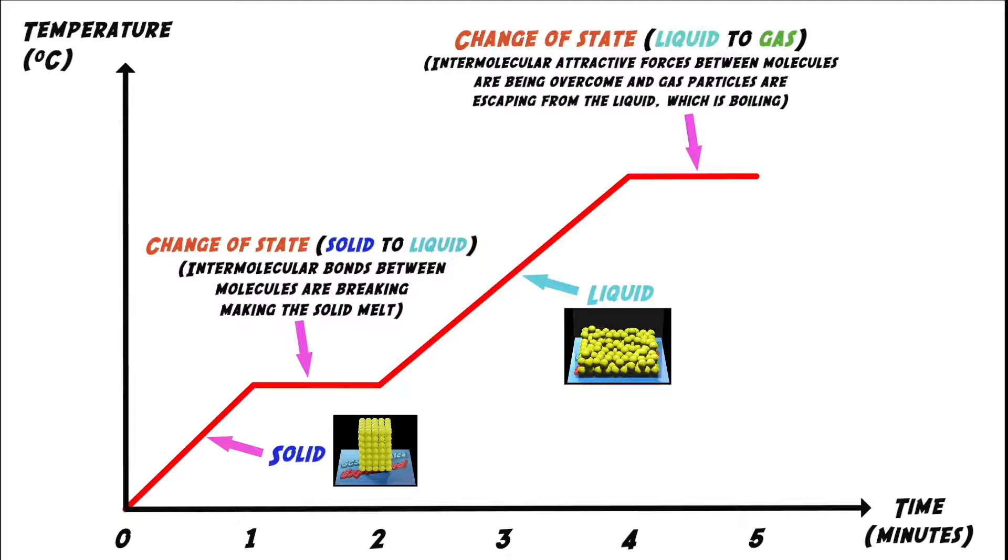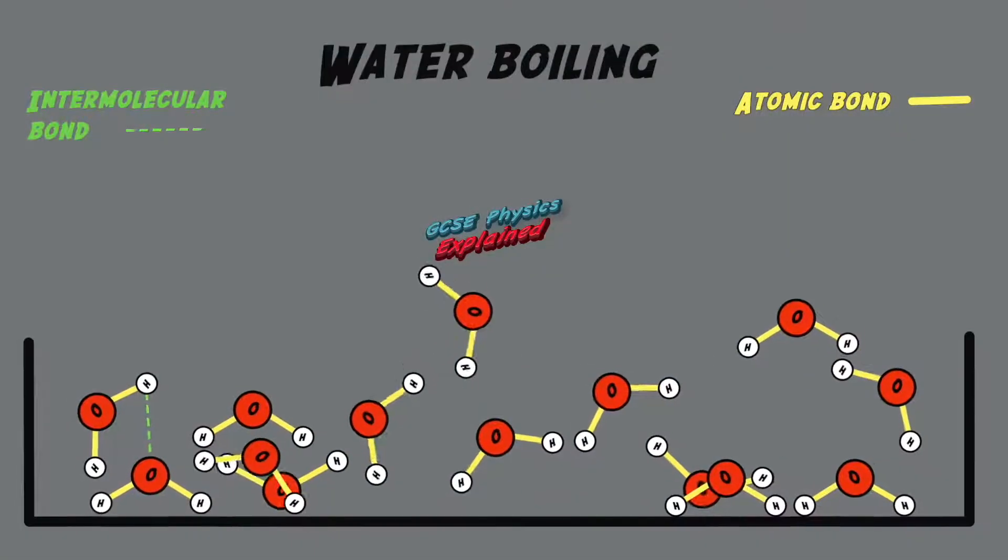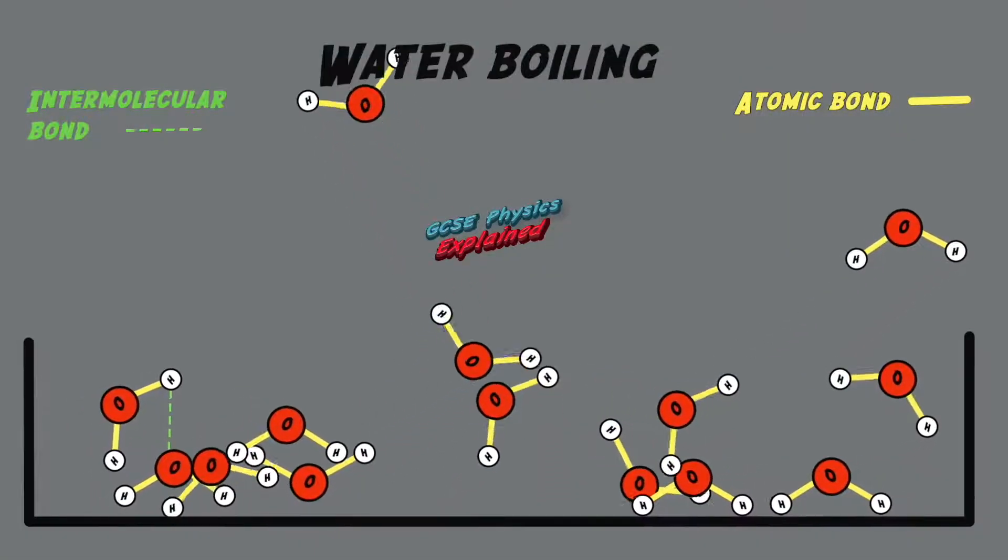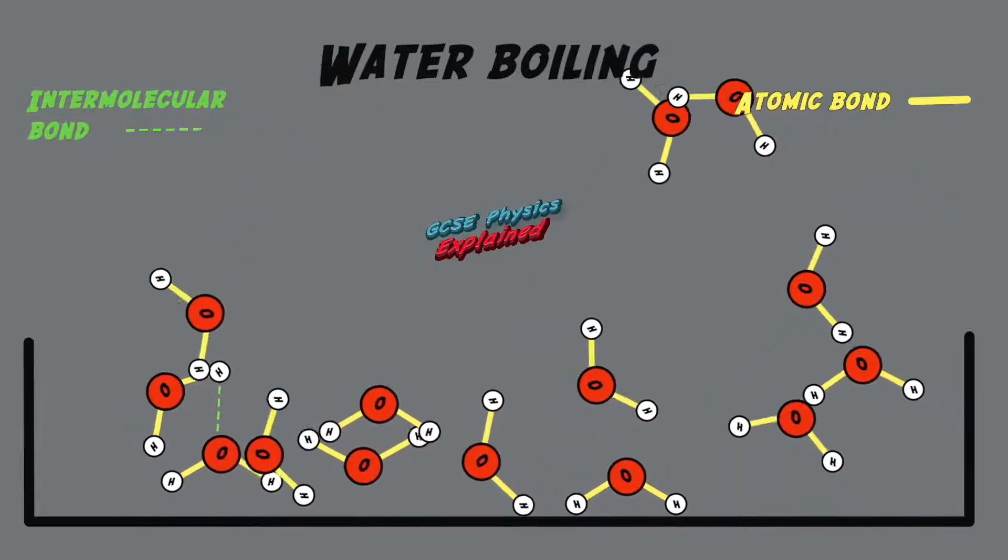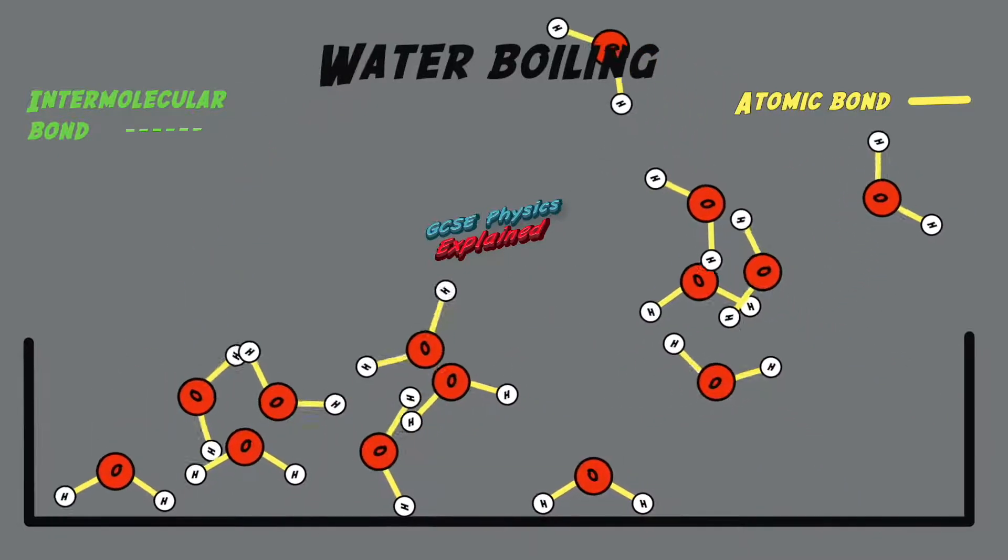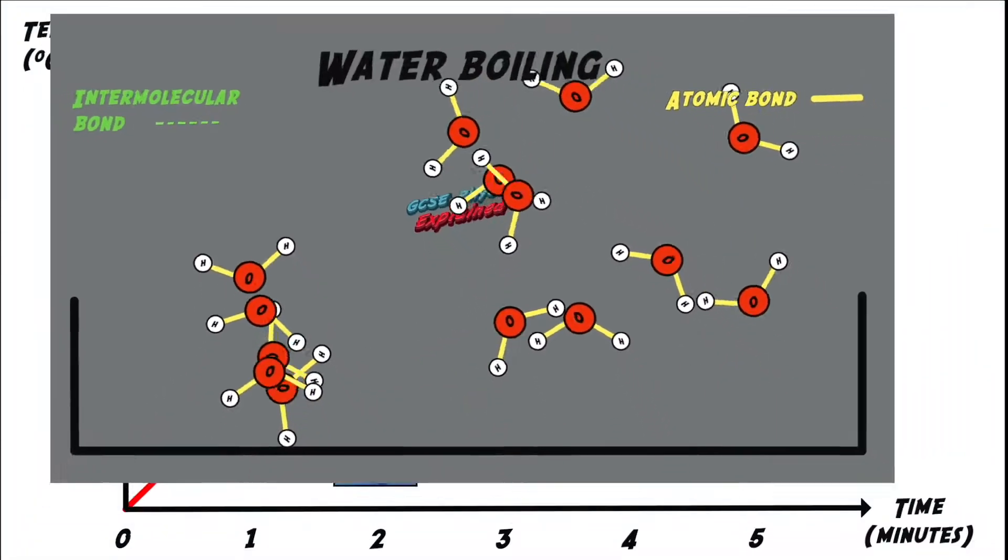The reason for the flat part this time is that the intermolecular bonds are being broken permanently because the particles now have lots of energy to overcome the intermolecular forces. This allows the gas particles to completely escape from the liquid.